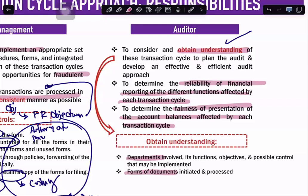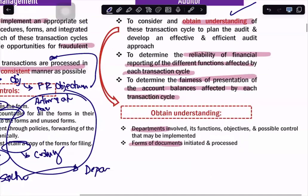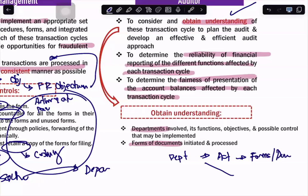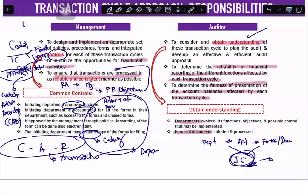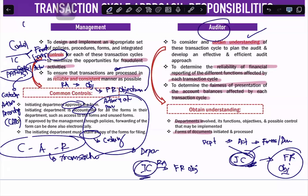We look into the departments, the activities, and the forms or documents, and we see if there is an internal control in place. This internal control must enable the company or entity to meet its financial reporting objective. Internal control must provide reasonable assurance that the entity will meet its financial reporting objective. As an auditor, we obtain an understanding of this internal control and check whether it will truly meet the financial reporting objective of the entity.